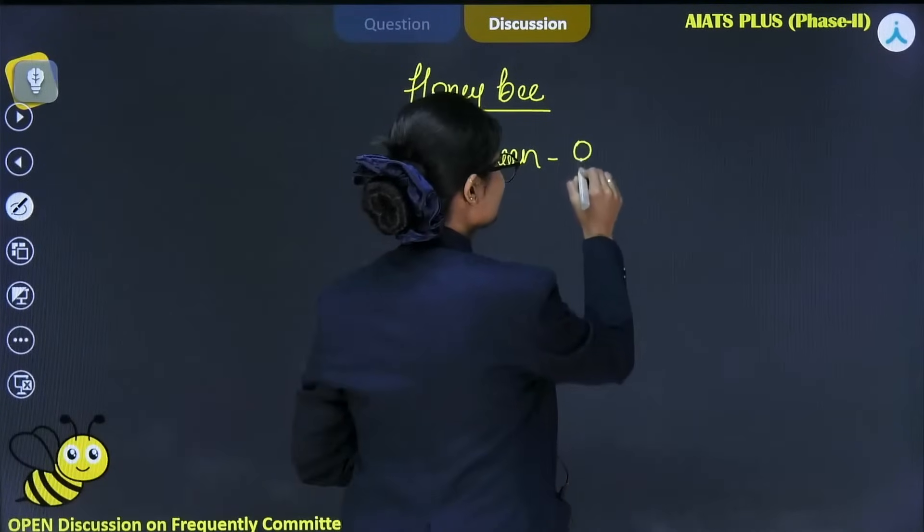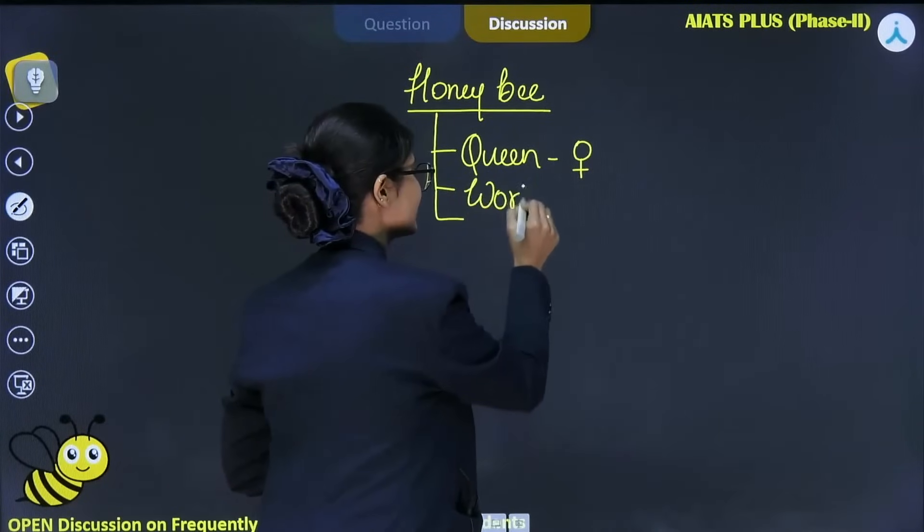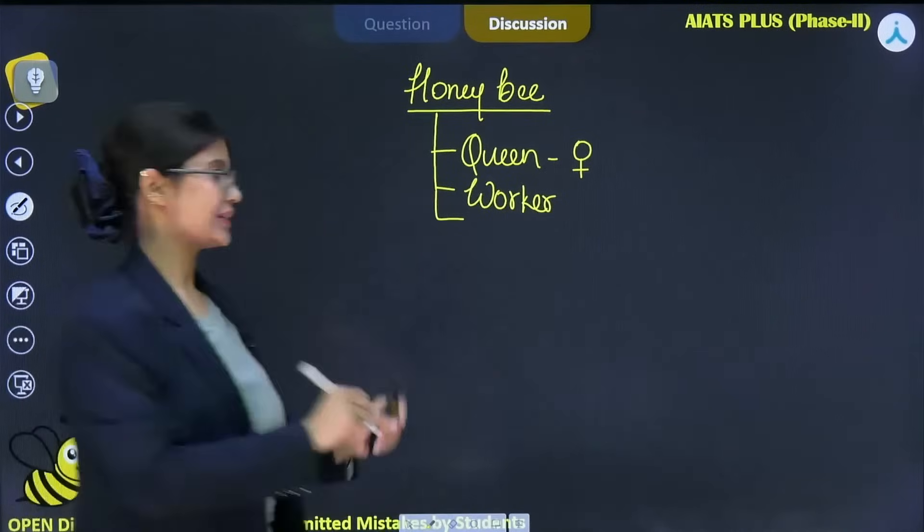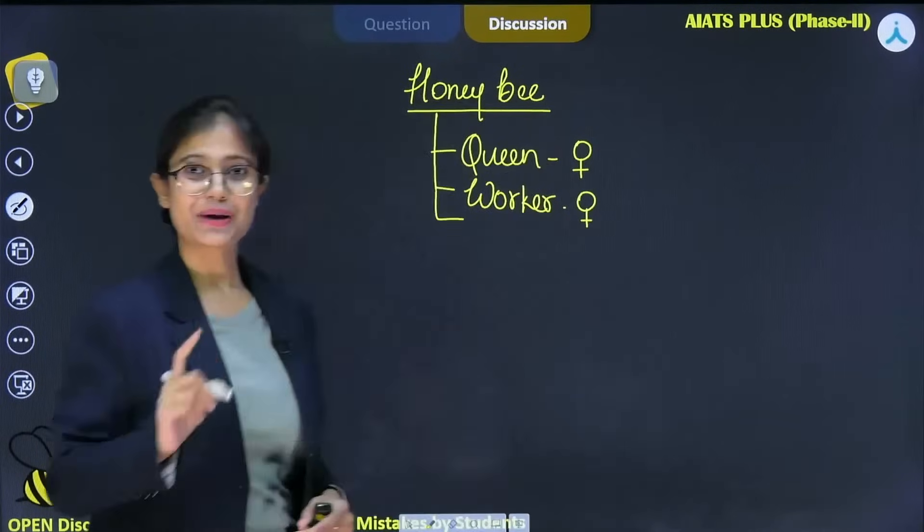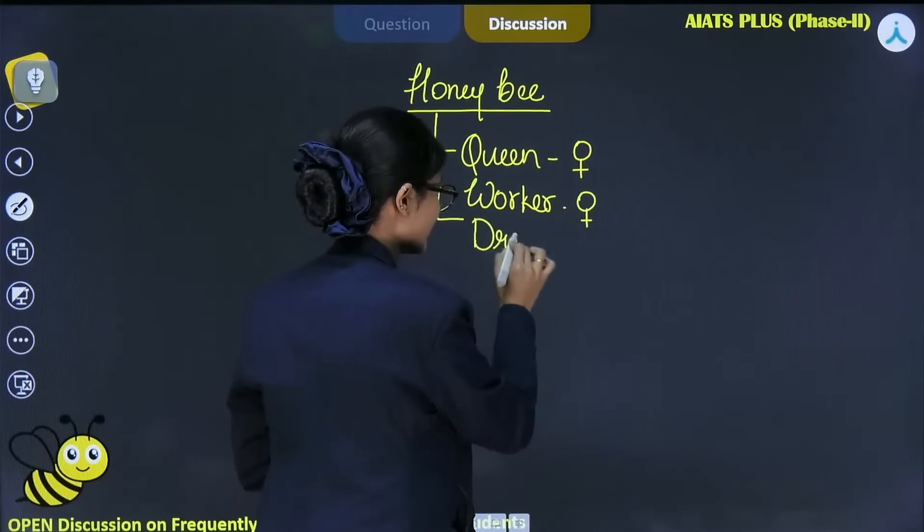It is female. Next one is worker bees. These are non-fertile females. They cannot reproduce, but they are female. Next one is drones. These are males.